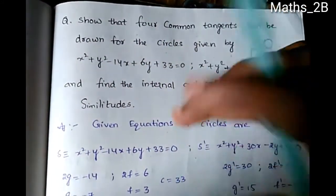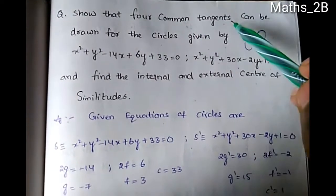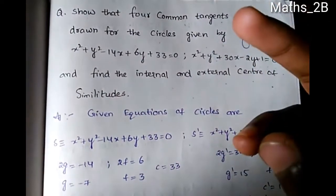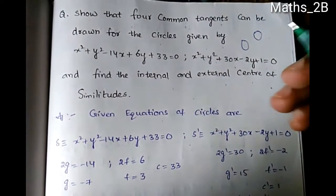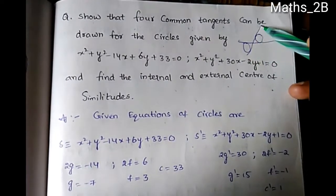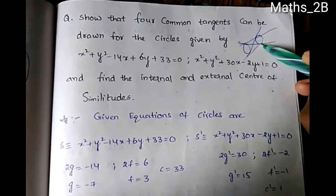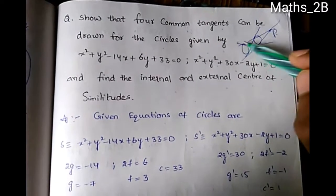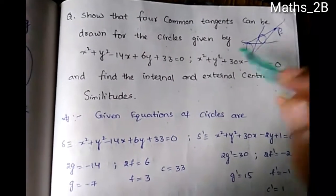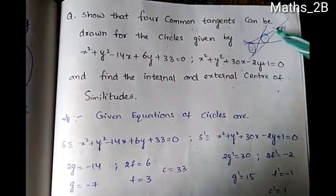We are going to show that four common tangents can be drawn for the circles, and find the external center of similitude. Taking two circles, we apply a point P for the external center of similitude. The direct common tangents intersect at the external center of similitude, which lies on the line C1C2.